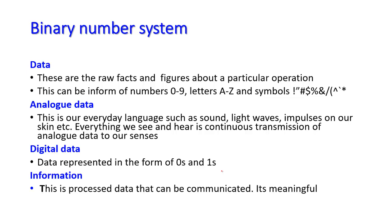Let's start with the numbering system of computers. But before we go on to that, let's define some of the most commonly used and most commonly confused words in the computer world. Let's start with data. What is data? Data are the raw facts and figures about a particular operation — it's meaningless. We're talking about numbers, letters, words, symbols, but it's actually meaningless. This is what we call data — it doesn't make any sense. That's why you have data entry people who are there to enter data inside the computer.